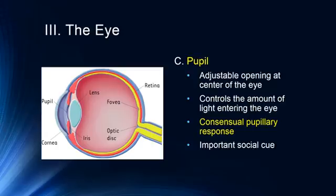The pupil is also an important social cue. Our pupils actually dilate when we're attracted to somebody. In the 1920s, women used to put belladonna in their eyes to make their pupils very large, so it looked like they were always interested in something. This is also part of the sympathetic nervous system response — when the sympathetic nervous system engages, pupils dilate to gather as much light as possible.